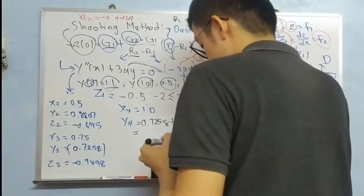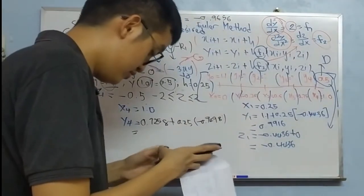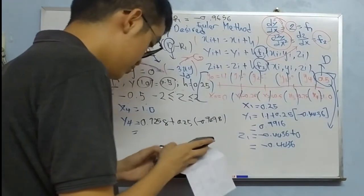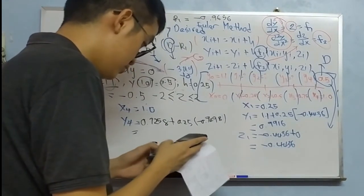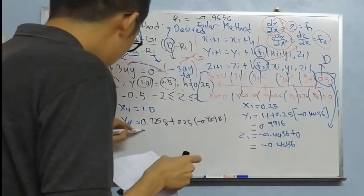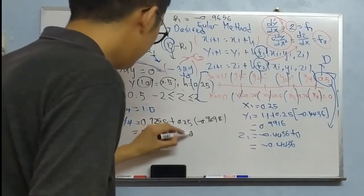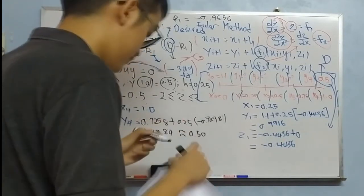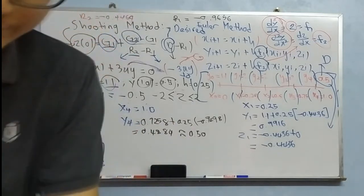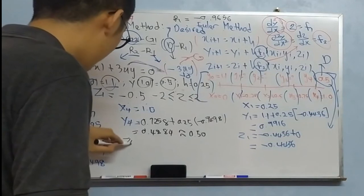Okay, let's see. 0.4884. So when you round off, it is approximate to 0.5. So now, don't forget your last value Z4.